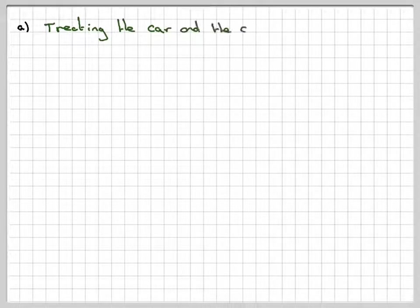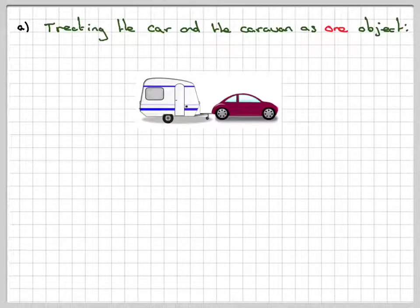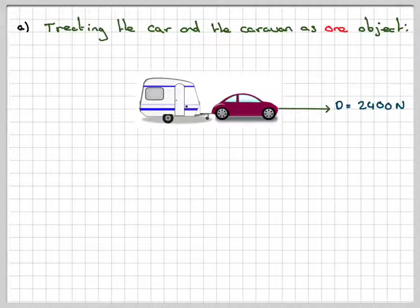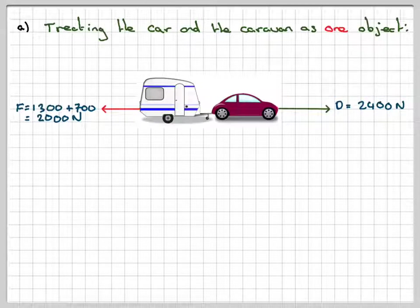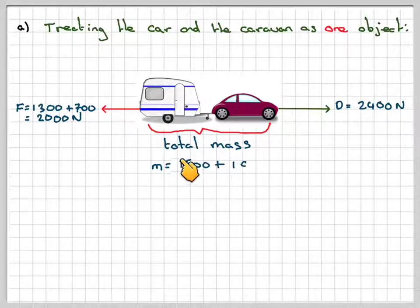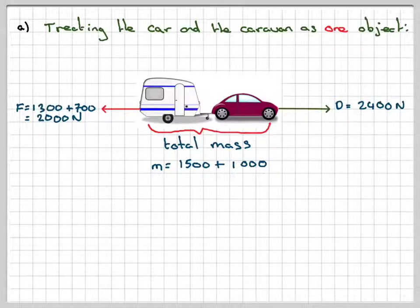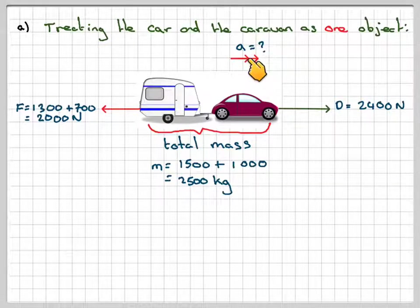For part A, treating the car and caravan as one object. You don't need to draw a detailed diagram — just draw them as a block. We have a driving force of 2,400 newtons and a total resistance of 1,300 plus 700, which is 2,000 newtons. The total mass is 1,500 plus 1,000, which is 2,500 kilograms.